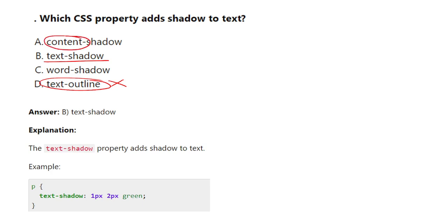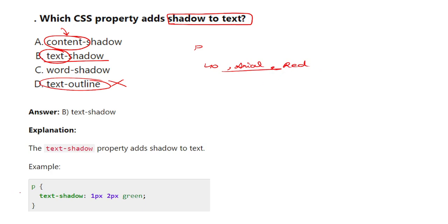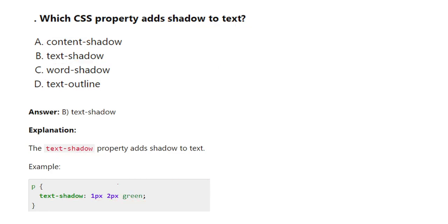We are not going to give shadow to the whole content on the website — we are going to add shadow to some particular text. For example, a paragraph in 40 font size, Arial font, with red color by default. If you want to add a shadow, you write: text-shadow: 1px 2px green. The shadow will be in green color, and 1px and 2px represent the width and height of the shadow.